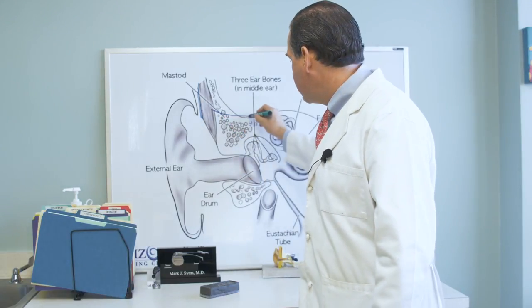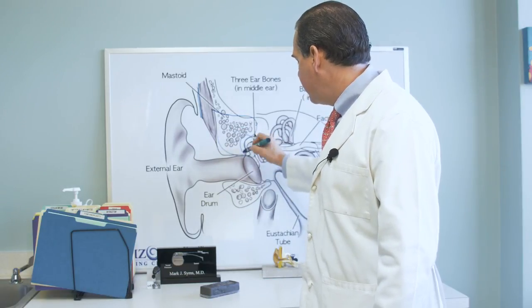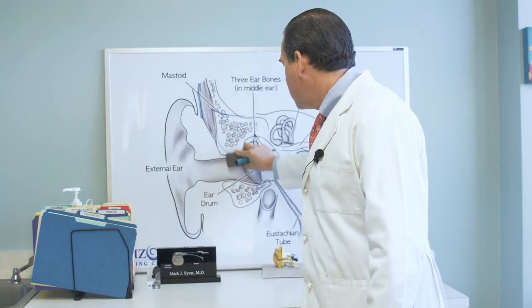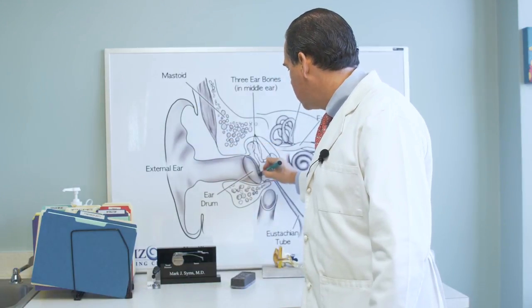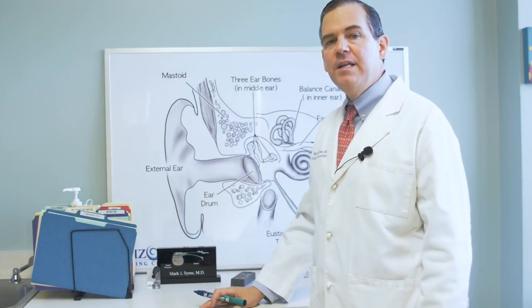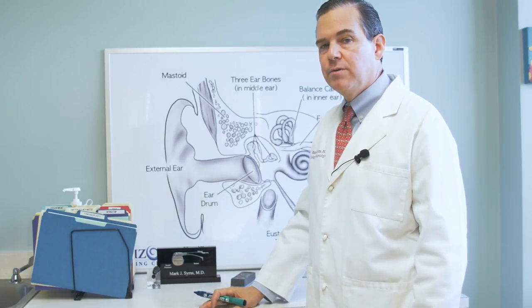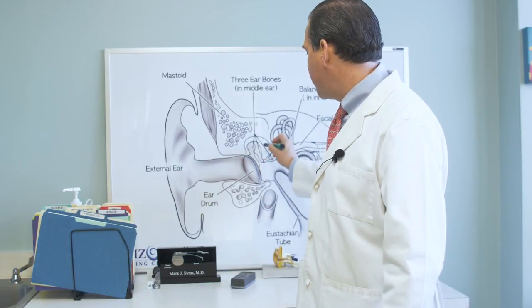Working through the mastoid bone in this area, and through the ear canal, the cholesteatoma, which is right here, is removed. The eardrum patch is put in place to rebuild the eardrum. If the bones of hearing were invaded, they will be replaced with an artificial bone, and then the entire reconstruction will be filled with packing.